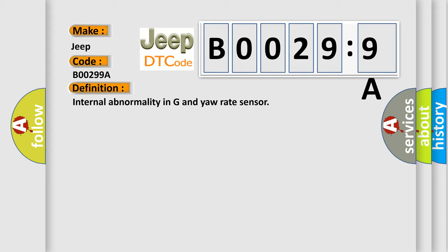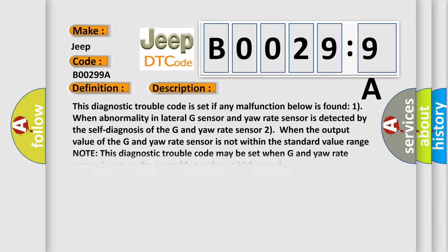Now this is a short description of this DTC code. This diagnostic trouble code is set if any malfunction below is found: 1, when abnormality in lateral G sensor and yaw rate sensor is detected by the self-diagnosis of the G and yaw rate sensor; 2, when the output value of the G and yaw rate sensor is not within the standard value range. Note: this diagnostic trouble code may be set when G and yaw rate sensor is put on the turntable turning at high speed.